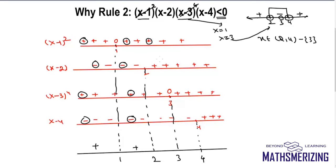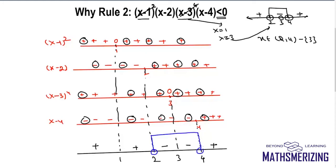Between 2 and 3: plus, plus, plus, and minus — so it is minus. Between 3 and 4: plus, plus, plus, and minus — it is minus. And when x is greater than 4 it is plus. I need less than 0, so the negative intervals are between 2 and 3, and between 3 and 4. At x equal to 3, the value is actually 0, so 3 must be removed from the solution. That is the logic behind Rule 2.